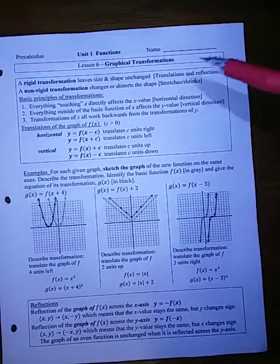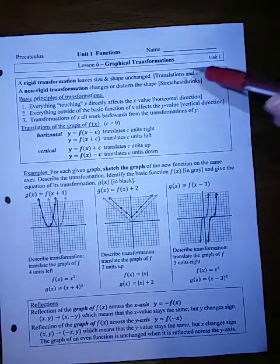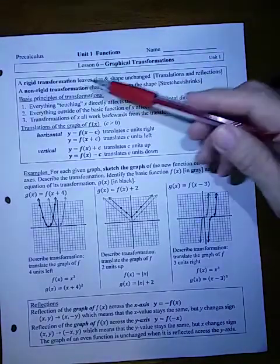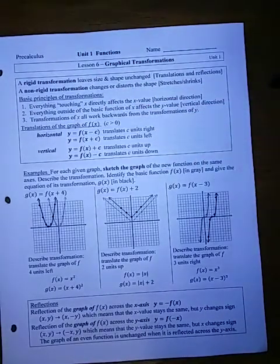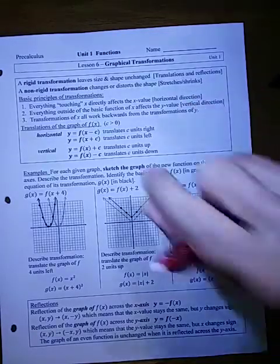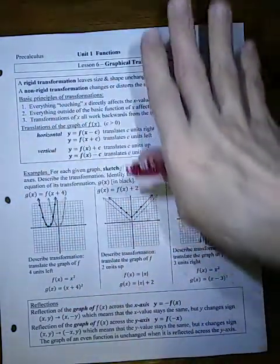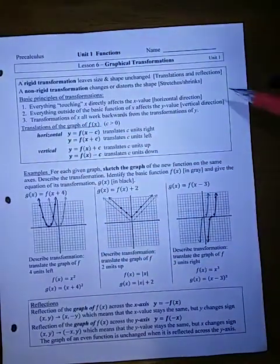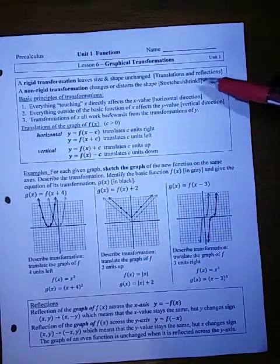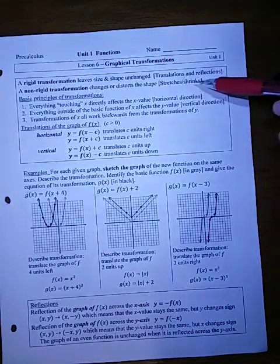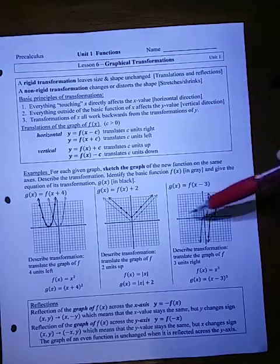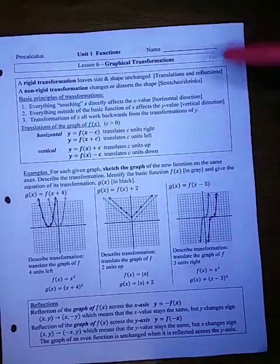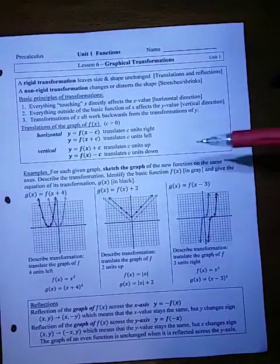We've seen different transformations before. Reflections and translations are called rigid because they leave the size and shape unchanged. Translations just move it along to a different spot, and reflections put it over some sort of axis. Non-rigid transformations are the stretches and shrinks — whether vertical or horizontal, they either pull it away or push it down towards one of the axes.